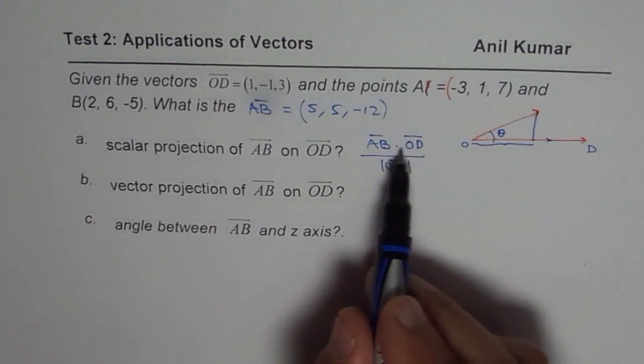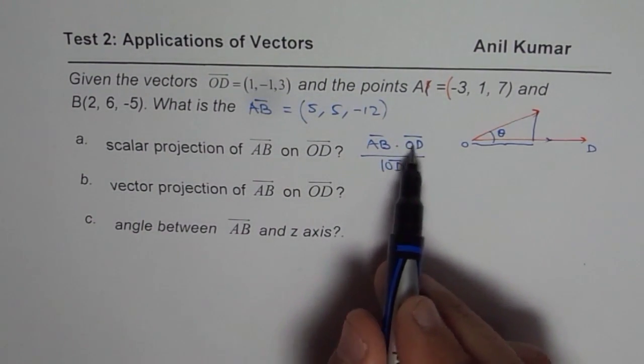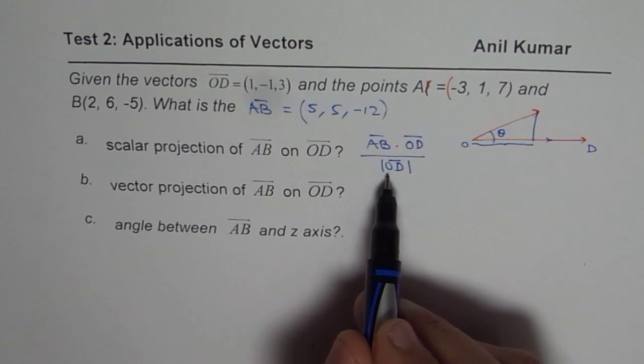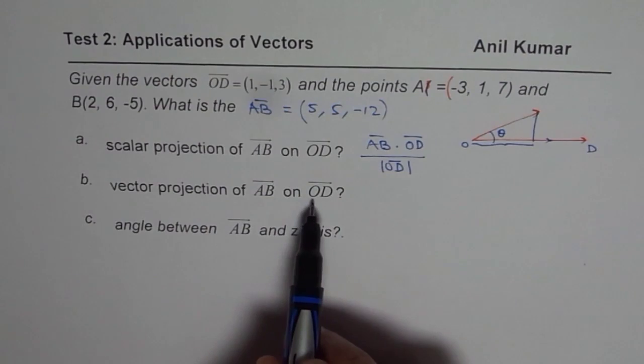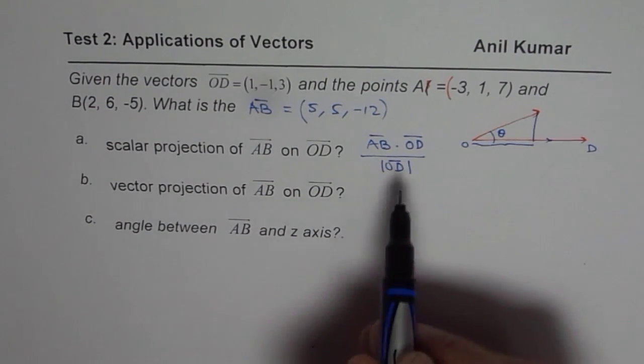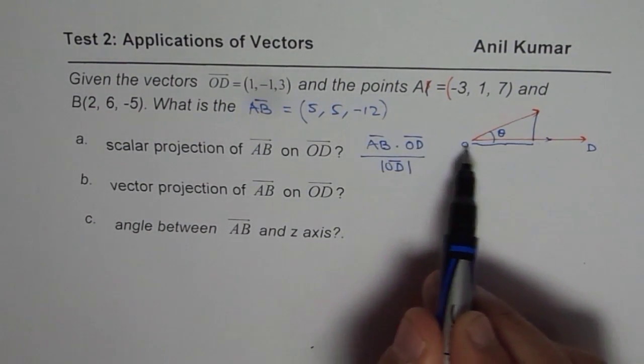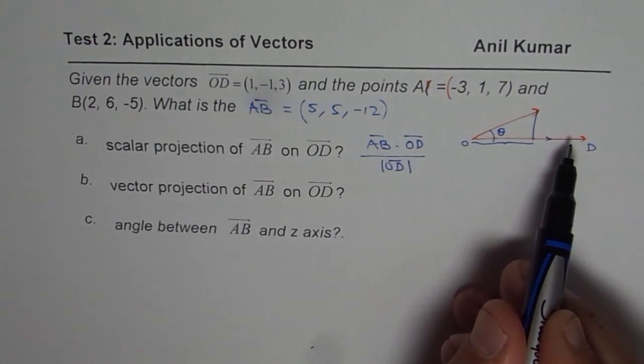OD is given to you. You can find the dot product, divide by the magnitude of OD, and get the scalar projection. So to find the vector projection, we need to multiply this by the unit vector in the direction of OD.